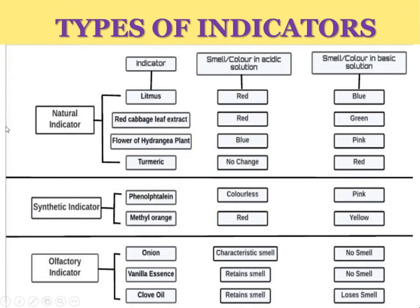These are the types of indicators, which we will discuss section by section. This is a total mind map very useful for exam purposes. In natural indicators, one is litmus — litmus changes to red in acidic solution and blue in basic solution. These are very important; take a snapshot as they are useful for your exam.